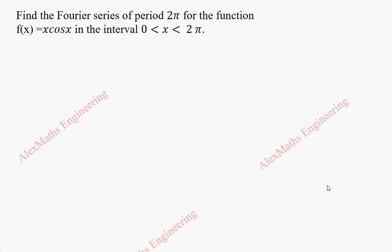Hi students, this is Alex here. In this video we are going to find the Fourier series of period 2π for the given function f of x = x·cos(x) in the interval 0 < x < 2π.